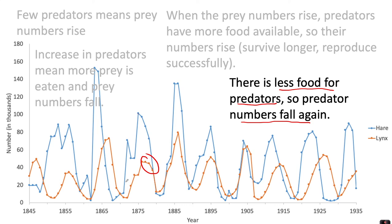This cycle of prey increasing and predators increasing and then falling is called a predator-prey relationship, and you can see that it is repeated every few years in these cycles. The numbers of hare you'll find is totally dependent on the numbers of lynx in the population, and vice versa — the number of lynx will also be dependent on the prey that is available.